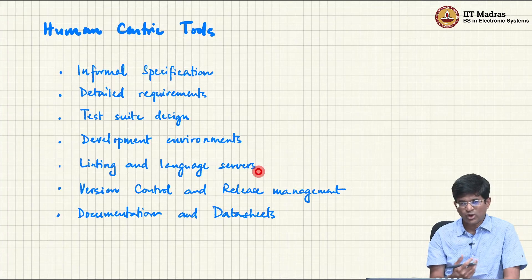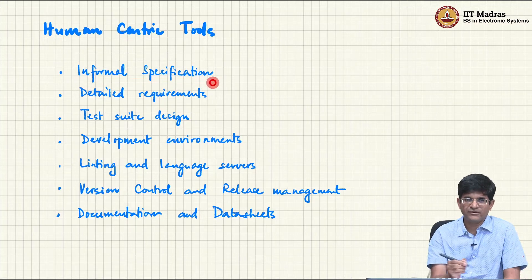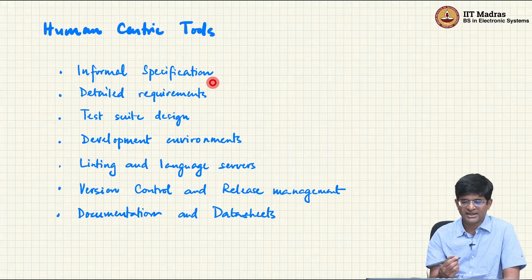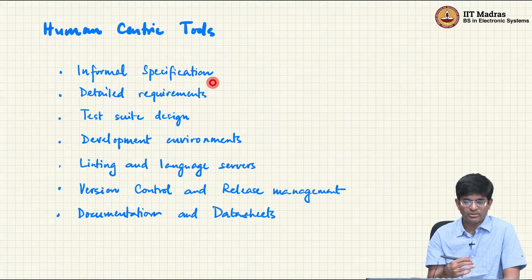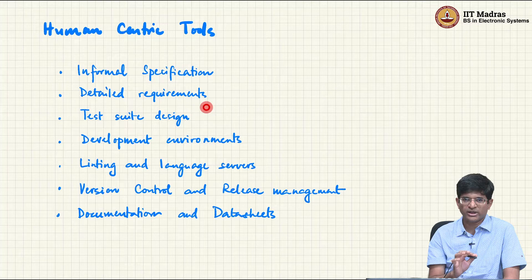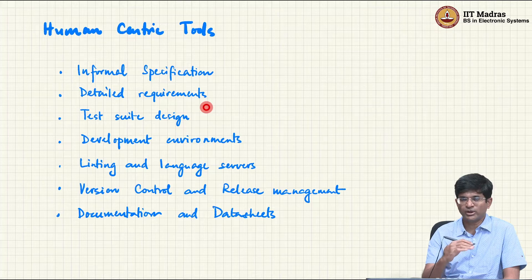To start with, there are a number of what I am calling human-centric tools. For example, we started off with an informal specification of what needs to be done — typically a text file, email exchange, Word document, or Google doc shared between people saying 'this is what I want.' That needs to get formalized into a set of detailed requirements. Rather than exchanging WhatsApp messages or emails, you want a proper template that asks: what are the inputs, what are the outputs, what is the technology, what are the assumptions.